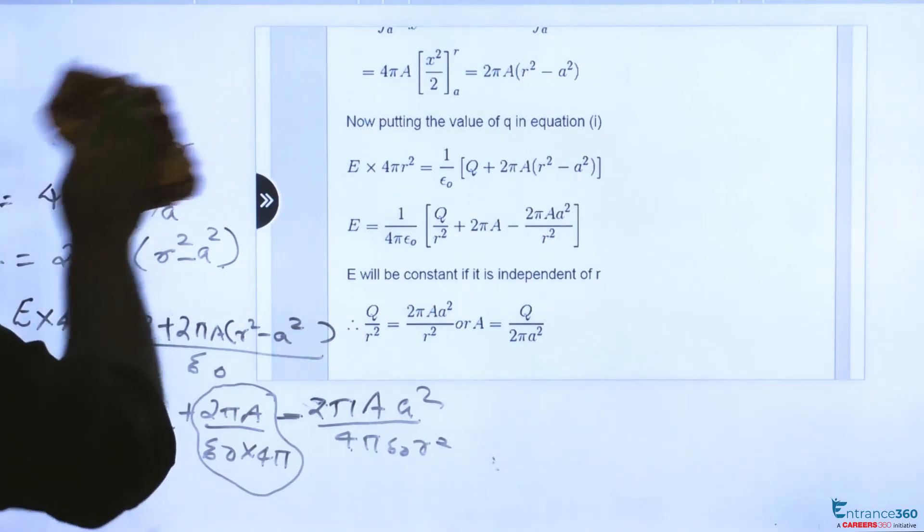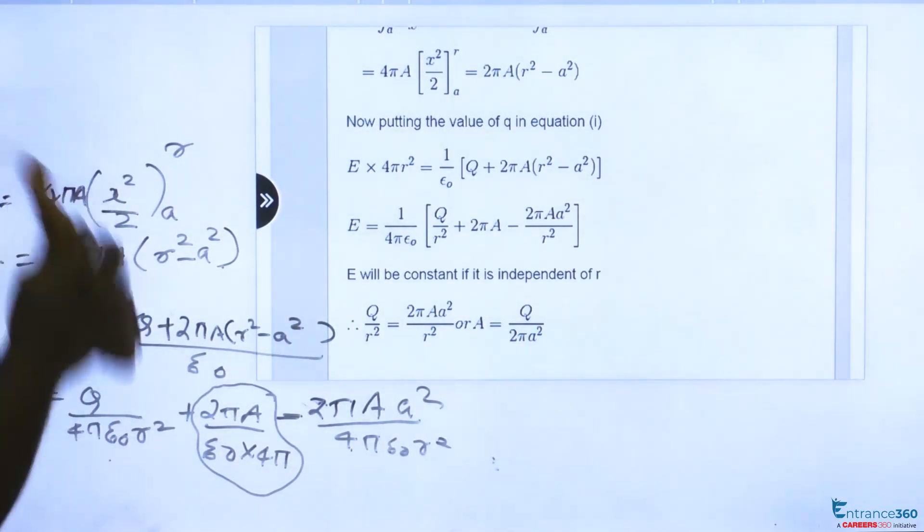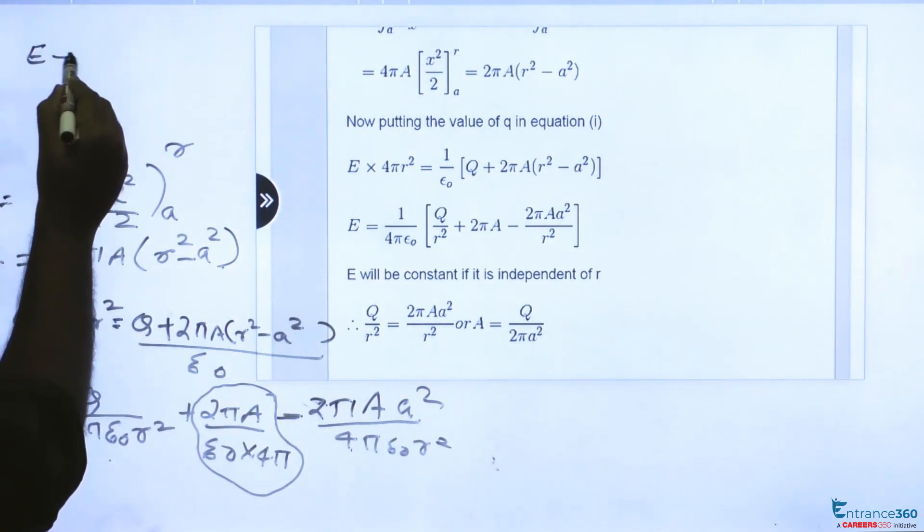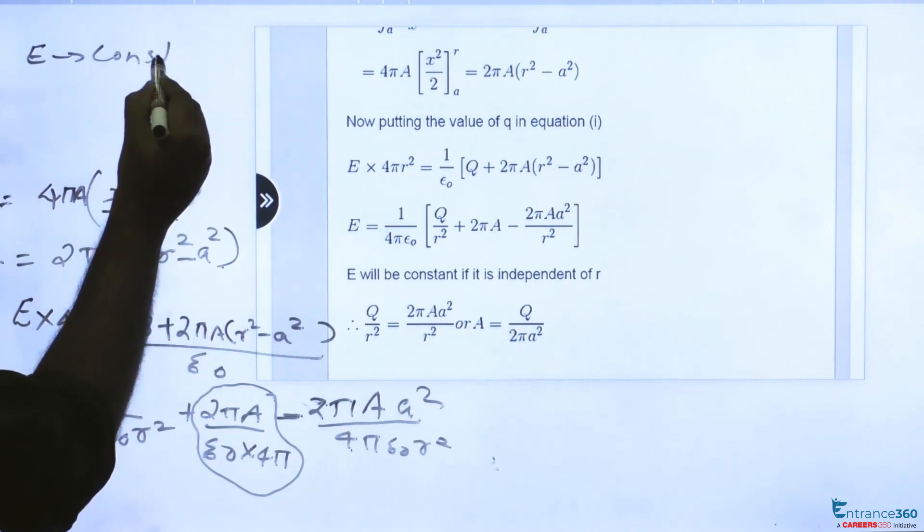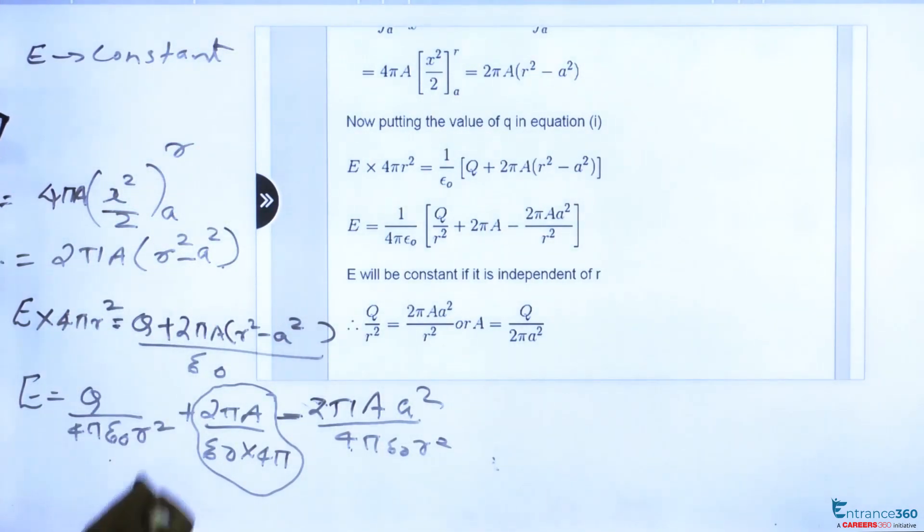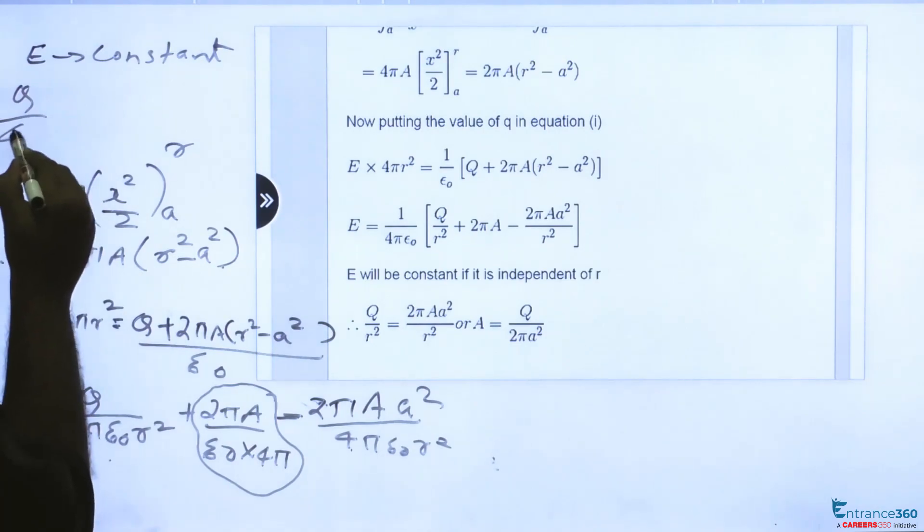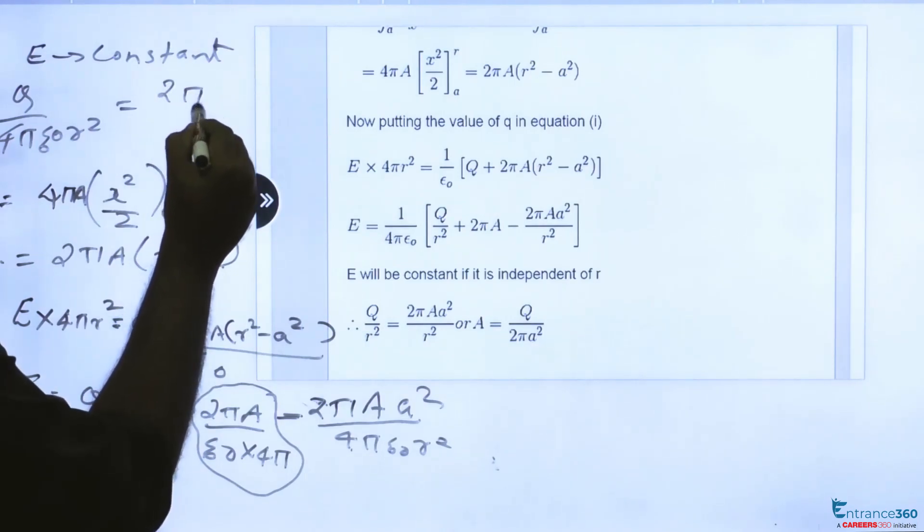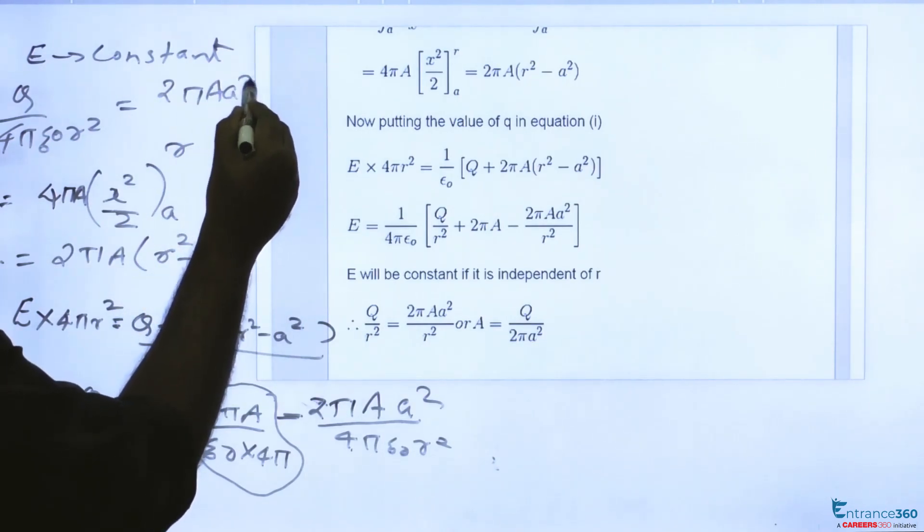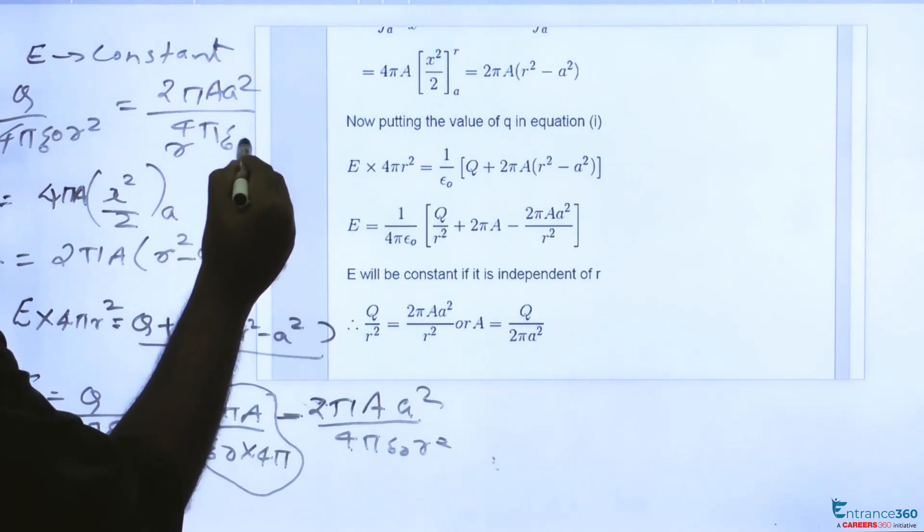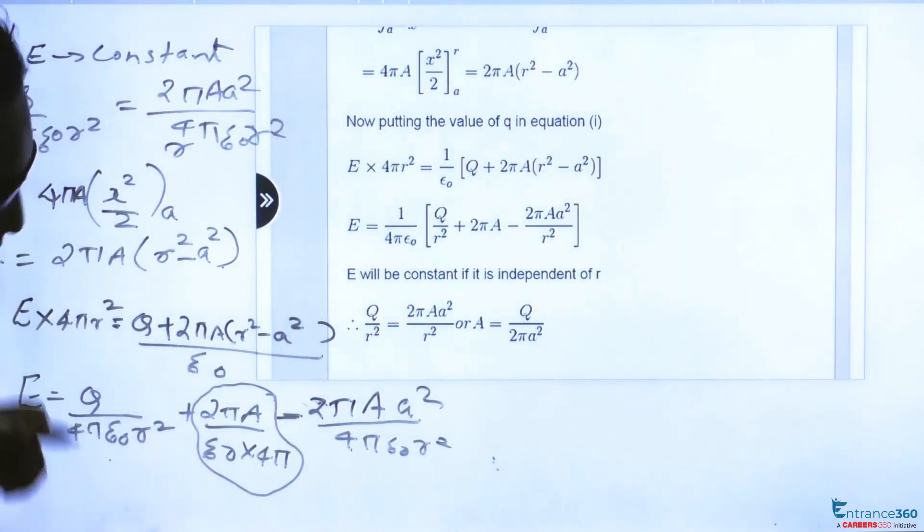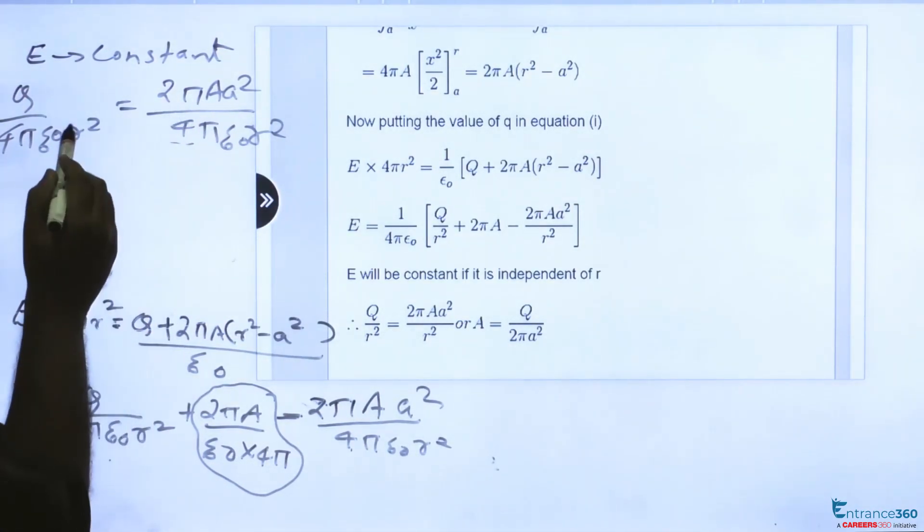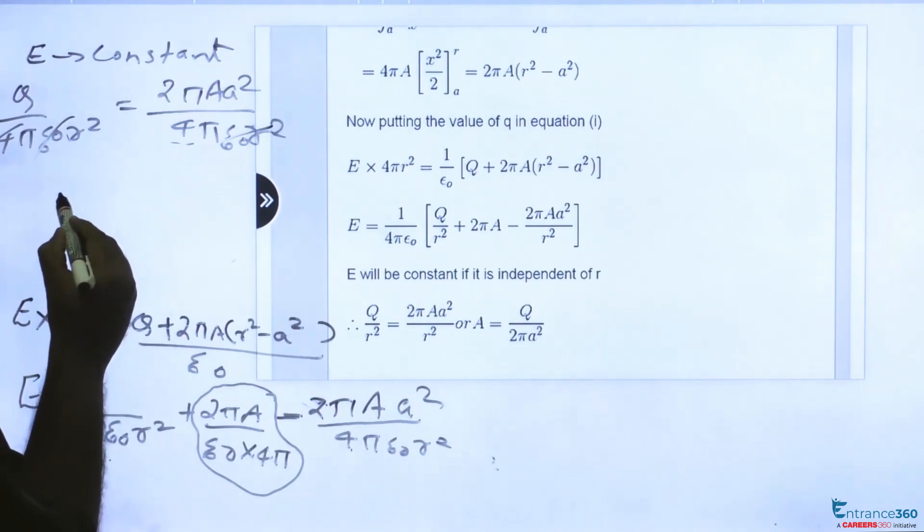So we can write for electric field to be constant, q by 4 pi epsilon 0 R square should be equal to 2 pi A into A square by 4 pi epsilon 0 R square.